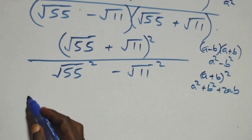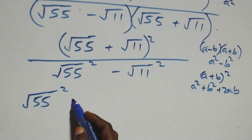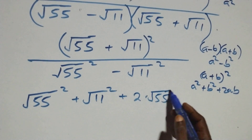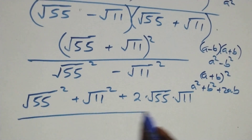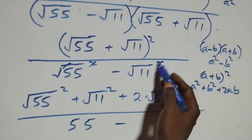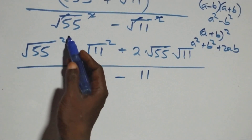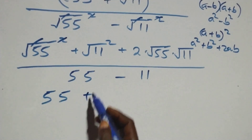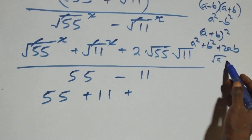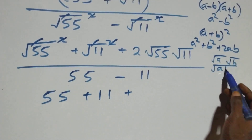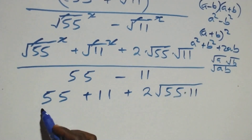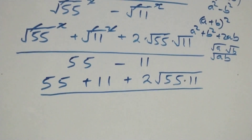Expanding the numerator: root 55 times root 55, all over the denominator. The square cancels the square root, giving 55, and similarly root 11 squared gives 11, so the denominator is 55 minus 11, which is 44. We also use root a times root b equals root(ab) to write the cross term as 2 times root(55 × 11).